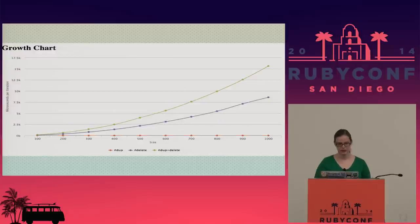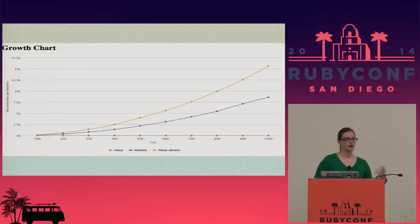For completeness, here's the same sort of example on the iterating-over-delete option — the doing it the right way, the dup-and-delete, has a higher cost than the underlying mutating case.